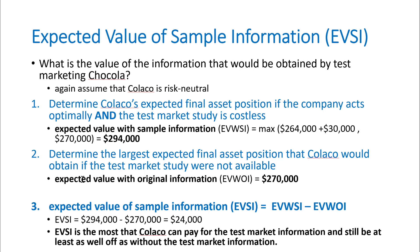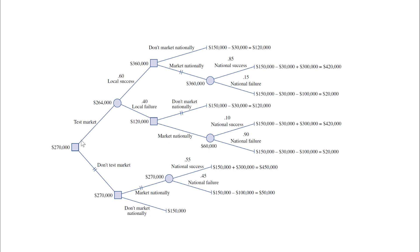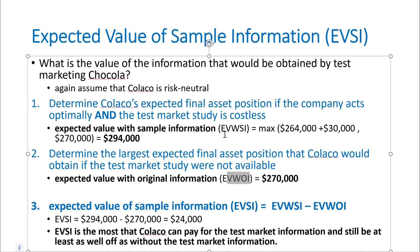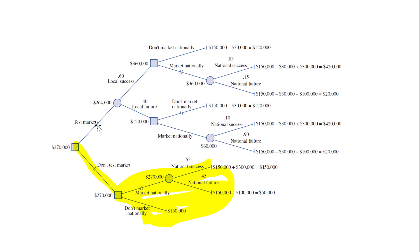Next, we determine the largest expected final asset position the company would obtain if the test market study were not available. We ignore the test market branch entirely, leaving only the main decision tree. That expected value is $270,000, called Expected Value With Original Information, or EVWOI. The difference between EVWSI and EVWOI is EVSI: $294,000 minus $270,000 equals $24,000. This means $24,000 is the most the company can pay for the test market information and still be at least as well off as without it — that's what the test market effort is worth.